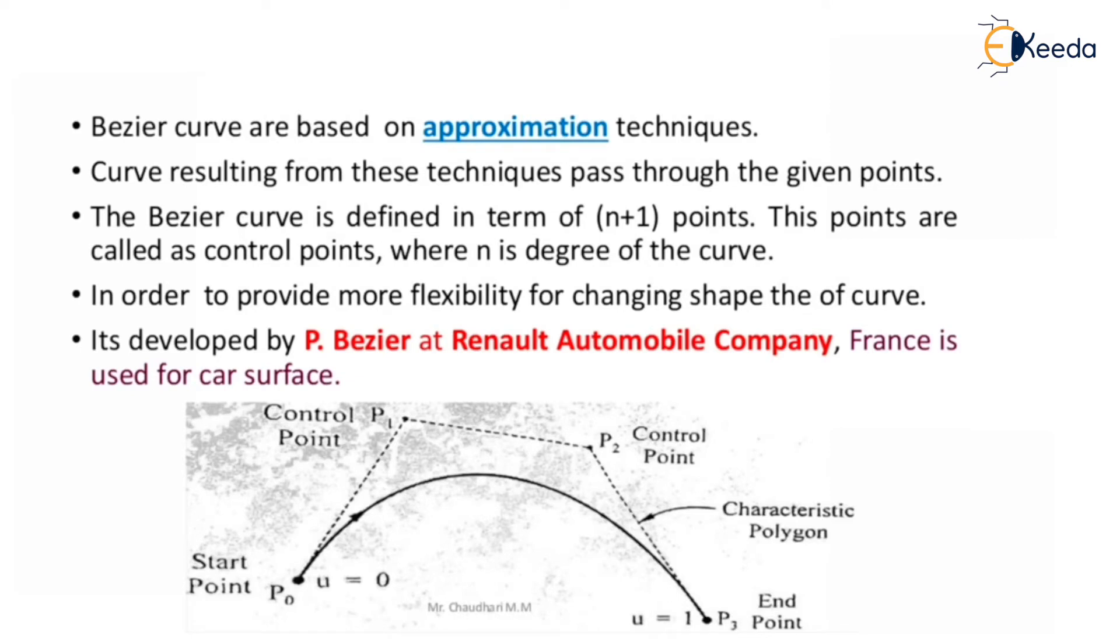Bezier curves are based on approximation techniques. Curves resulting from these techniques pass through the given points, and the Bezier curve is defined in terms of n plus 1 points. These points are called control points, where n is the degree of the curve, in order to provide more flexibility for changing the shape of the curve.